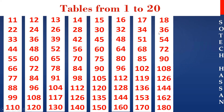18th table: 18 1s are 18, 18 2s are 36, 18 3s are 54, 18 4s are 72, 18 5s are 90, 18 6s are 108, 18 7s are 126, 18 8s are 144, 18 9s are 162, 18 10s are 180.